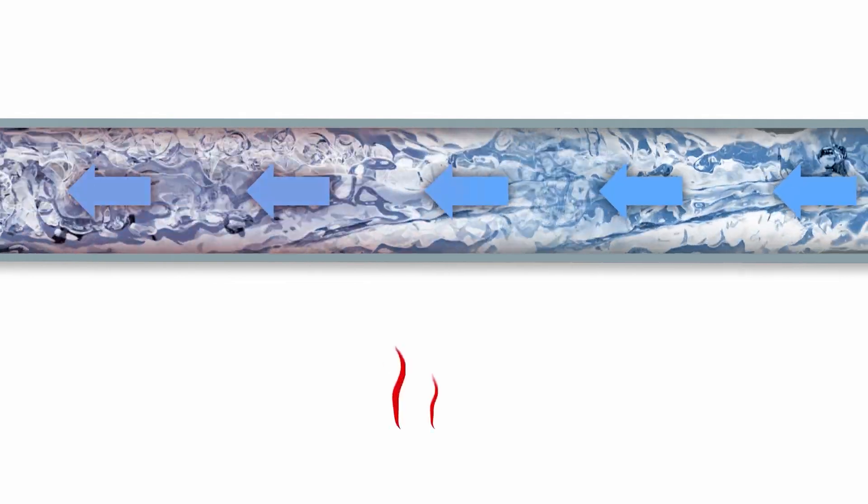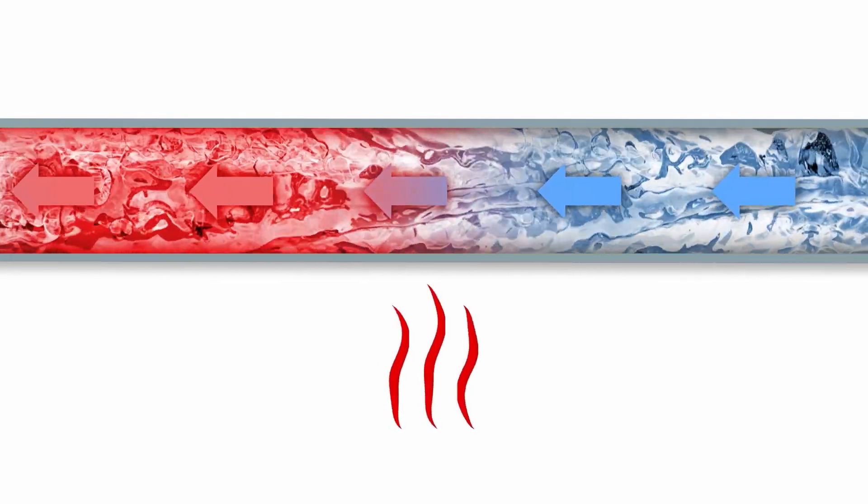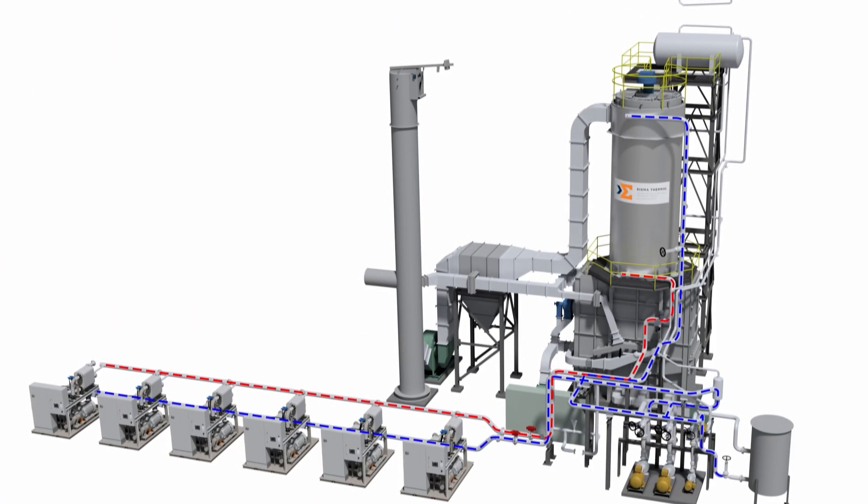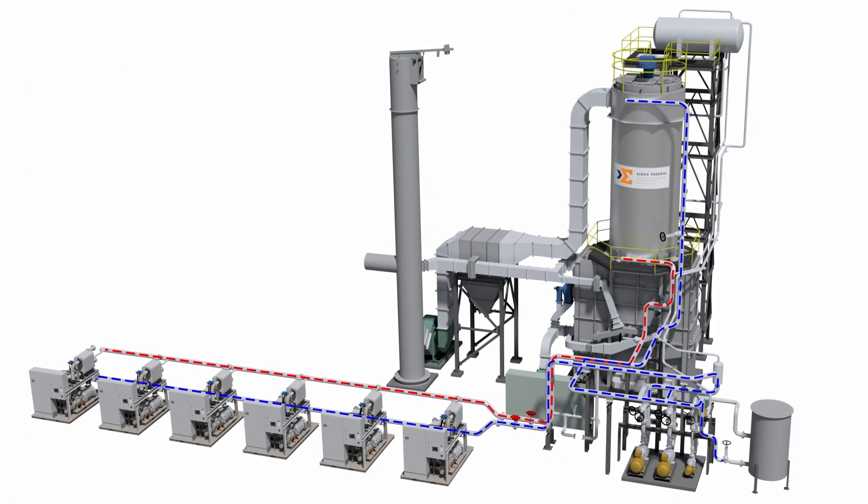Without getting into the engineering minutia, waste heat is captured at the heater or furnace using an exhaust gas or liquid heat exchanger, which then heats a circulated heat transfer fluid in a closed loop.